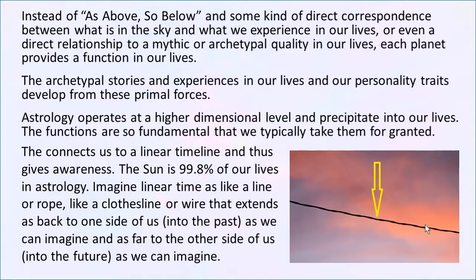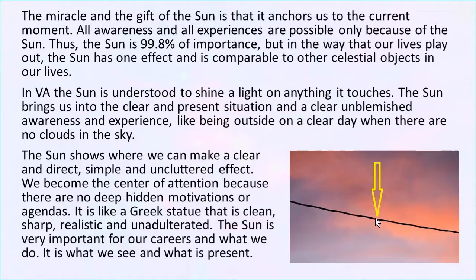Again, imagine a wire, or a rope, or a clothesline that extends as far back to one side of us into the past as it does to the other side of us into the future. And we happen to be where that arrow is pointing on that point. That's what the Sun does — connects us to that point. And it makes the reality that we have as we live on planet Earth. The miracle and the gift of the Sun is that it anchors us to the current moment. All awareness and all experiences are possible only because of the Sun.